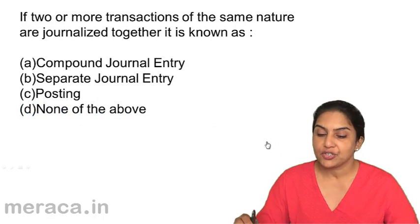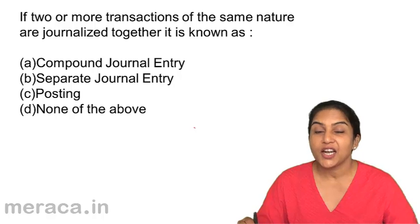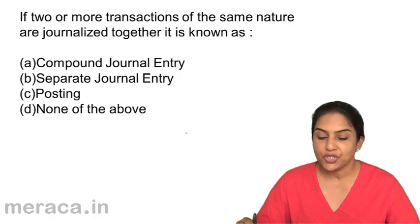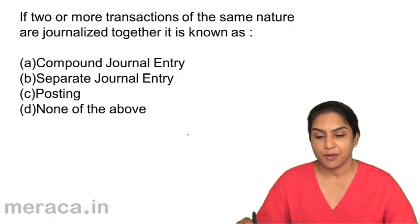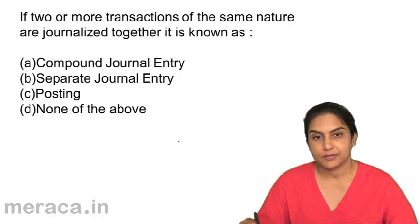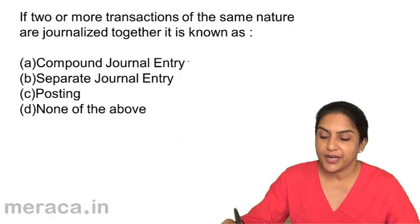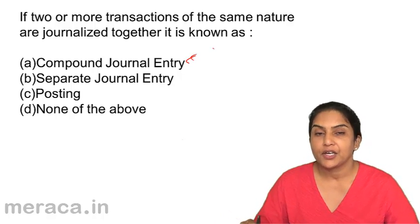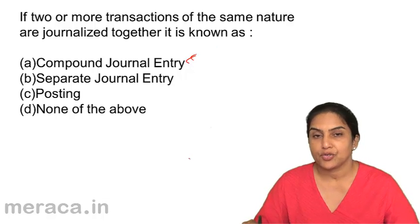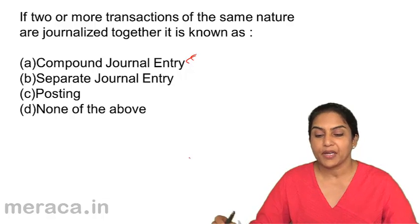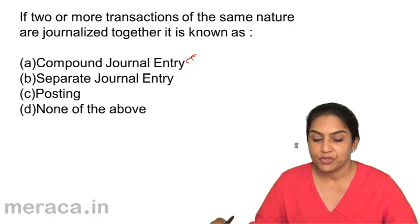Question 9: If two or more transactions of the same nature are journalized together, it is known as — A: compound journal entry, B: separate journal entry, C: posting, or D: none of the above. When you have two or more debits and one credit, or two or more credits and one debit, you can call it a compound journal entry.